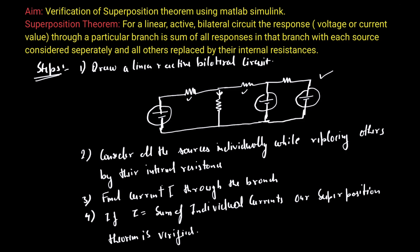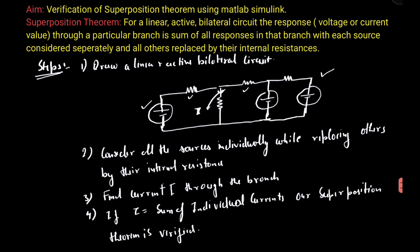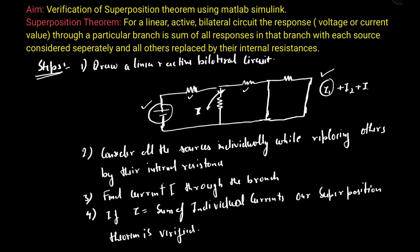To find the current through a particular branch, we consider each source individually. For example, if I consider one source, I replace all other sources by their internal resistance, which reduces the circuit. I can then find the current due to that first source. I repeat this process for all other sources, and the net current through the branch is the sum of all these individual currents.